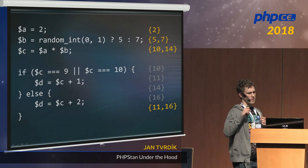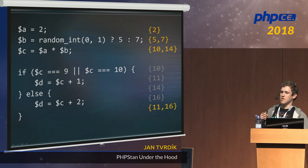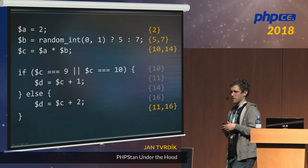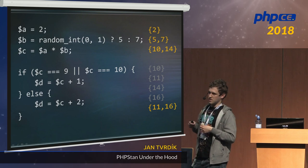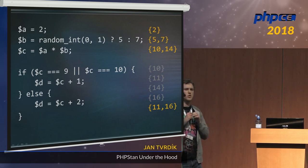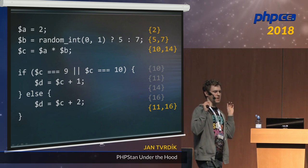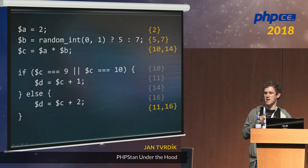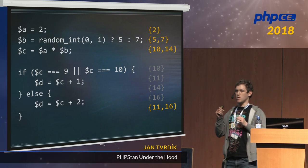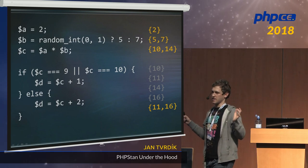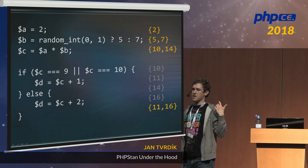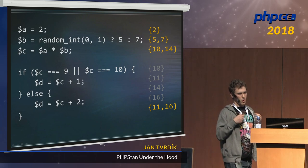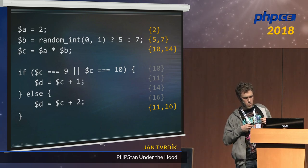After the entire if statement, PHPStan uses the union operation to combine the possible values from the positive and negative branches, giving a set of {11, 16}. It's important to note that these algorithms work not just on tiny sets but also on gigantic sets — it doesn't matter how large the set of possible values is, this will always work.